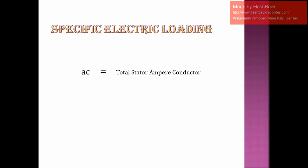Similarly, we have specific electric loading. Specific electric loading is defined as the number of stator ampere conductors per meter of stator periphery at the air gap. Mathematically, it is the product of Iz and Z — our total electric loading — divided by πD, where D is the diameter of the main stator core.